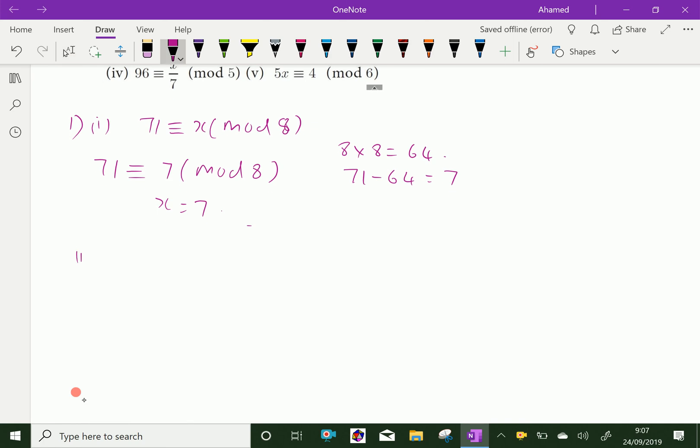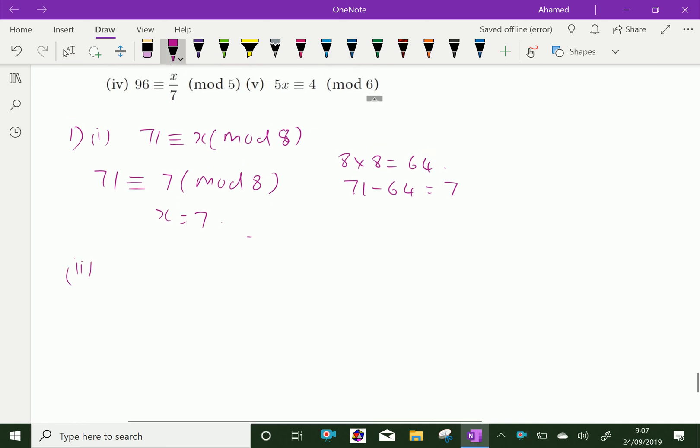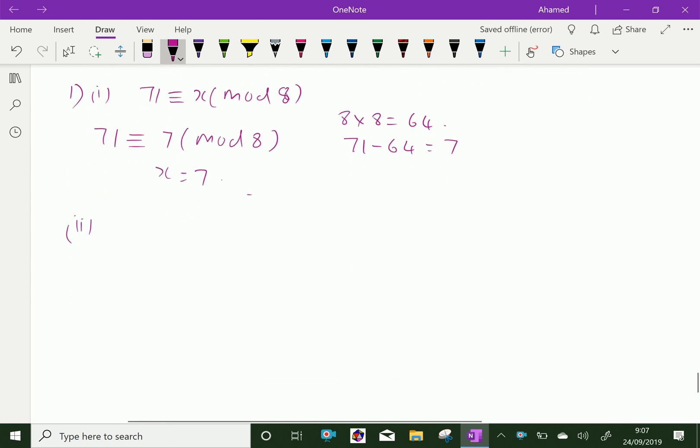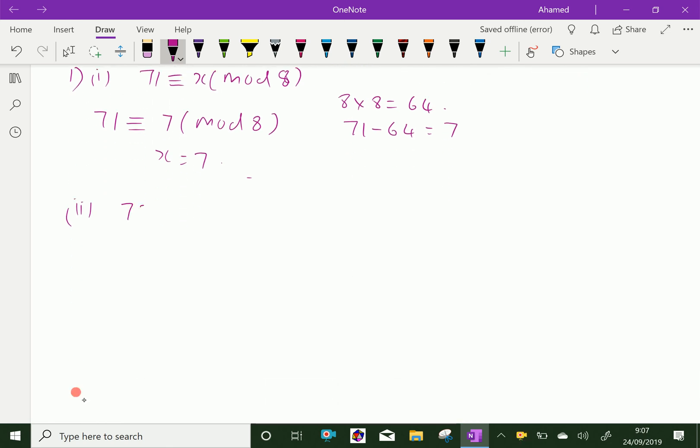Question number 2: 78 plus x equals 3 mod 5. 78 plus x is equivalent to 3 mod 5.